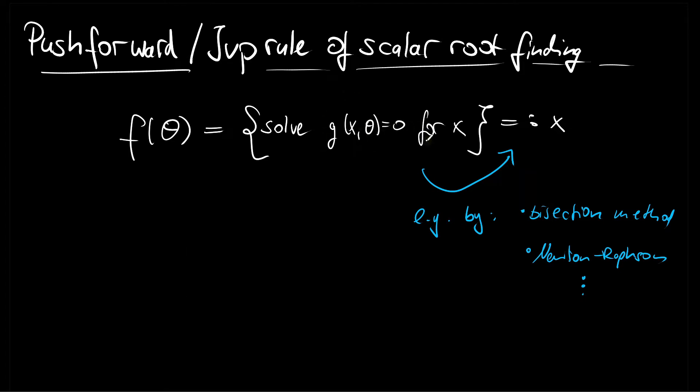Let us assign some dimensionalities here. I already mentioned, so it's a scalar root finding problem, which means that x is a real-valued number, as well as theta is a real-valued number. Then g is our optimality condition. This shall be a function which takes two real-valued numbers and maps them to a real-valued number. And then we have f, which is our wrapper, which takes the parameter and then evaluates the numerical algorithm.